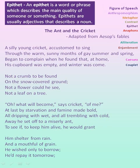Next, we shall see epithet. An epithet is a word or phrase which describes the main quality of someone or something. Epithets are usually adjectives that describe a noun. So in the first line, 'a silly young cricket' — here the cricket is described using the words silly and young — so epithet.